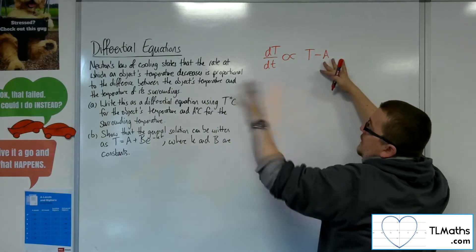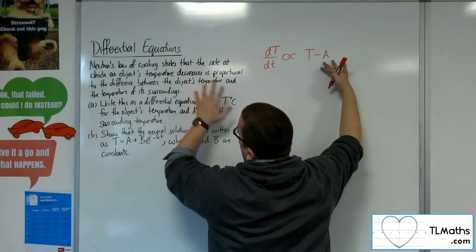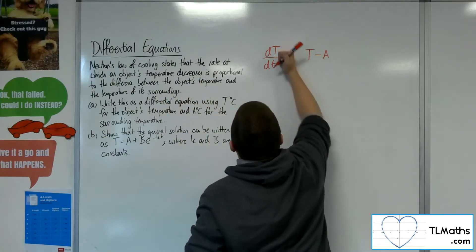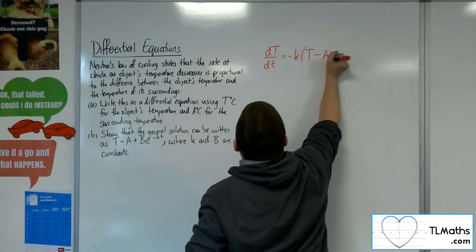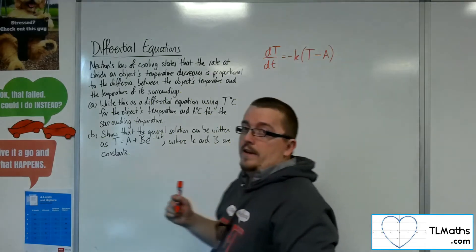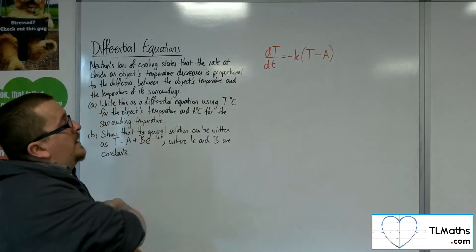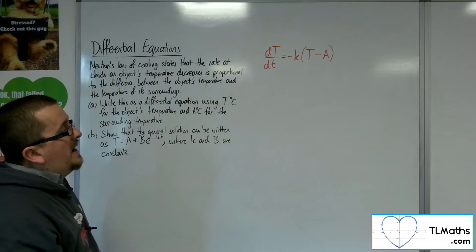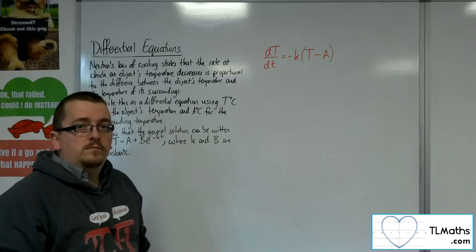So if it's decreasing at a rate proportional to that difference, then we could say that equals minus K times T minus A. So decreasing gives us that negative in there. The T minus A here will be greater than zero.